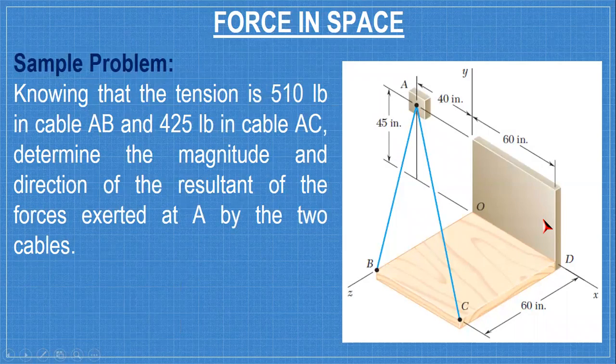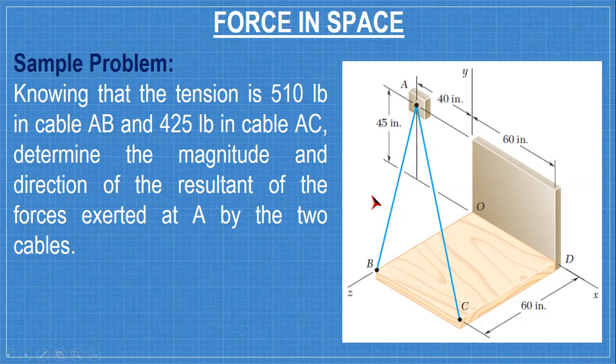Okay, our first problem is this: knowing that the tension is 510 pounds in cable AB and 425 pounds in cable AC, determine the magnitude and direction of the resultant of the forces exerted at A by the two cables. So you analyze the point where the forces will meet, in this case it's point A, and since tension in cable then the direction of the force will be from A to B and from A to C.